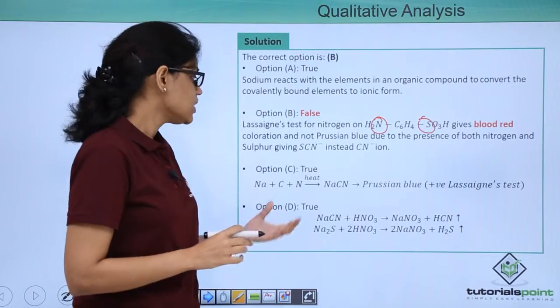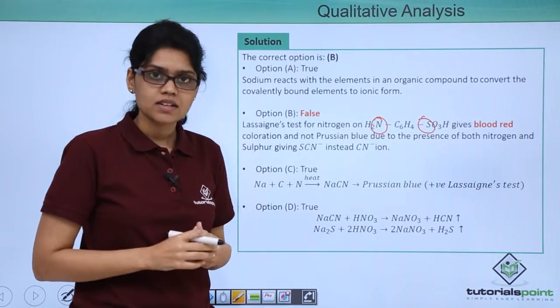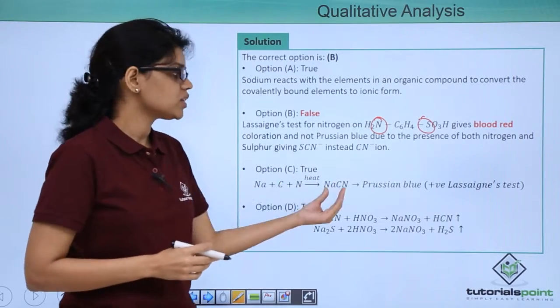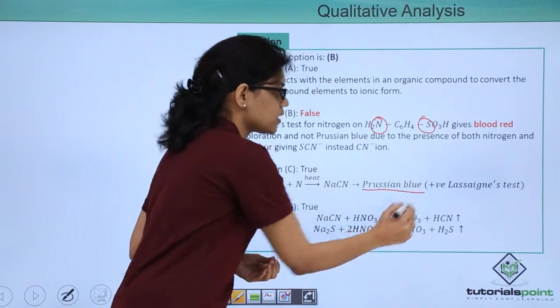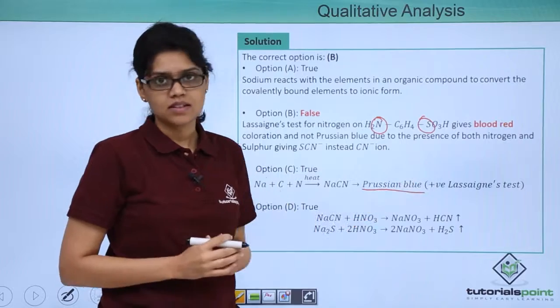Option C states that NaCN gives a positive Lassaigne's test. It is true because this particular NaCN gives a complex finally which is Prussian blue in colour, nothing but a positive Lassaigne's test.